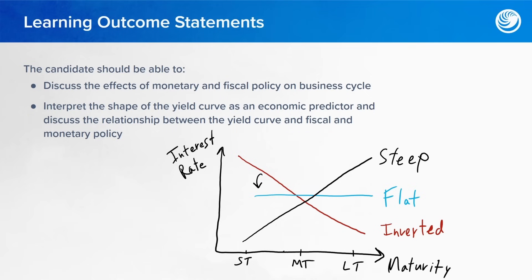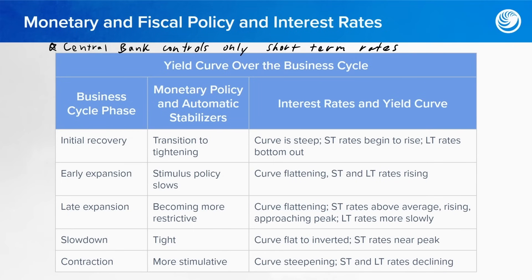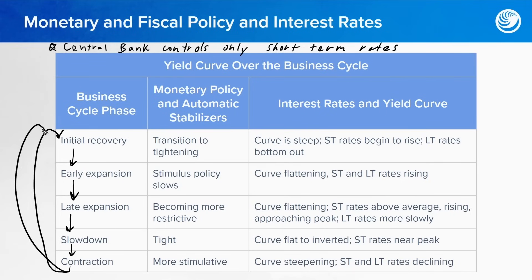Let's dive into the five business cycle phases listed here. The cycle goes: contraction, initial recovery, early expansion, late expansion, slowdown — and then back to contraction again, repeating in a cycle.